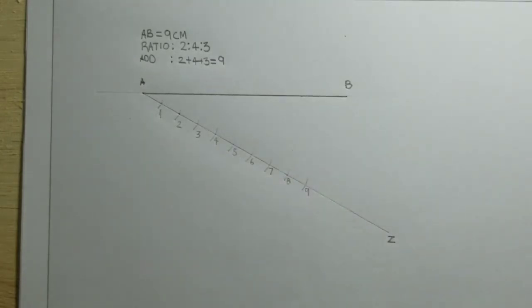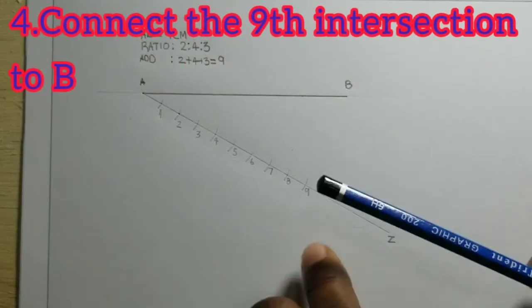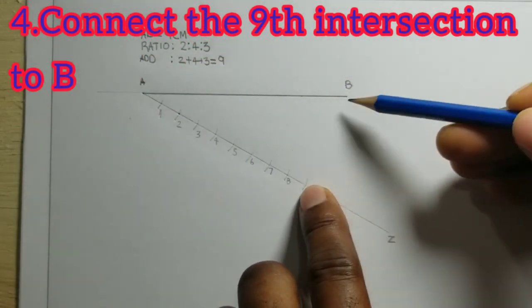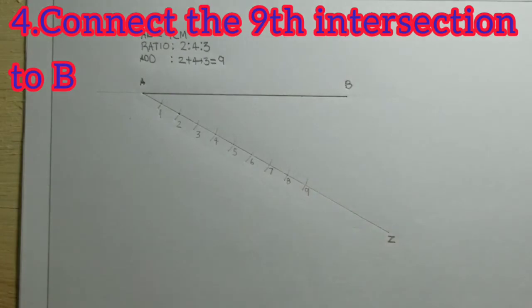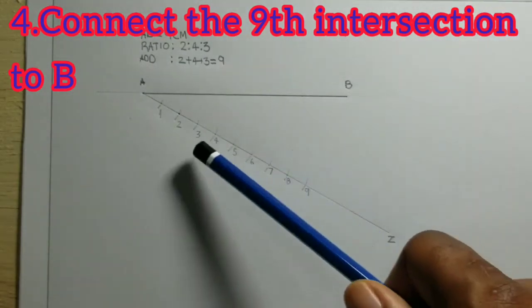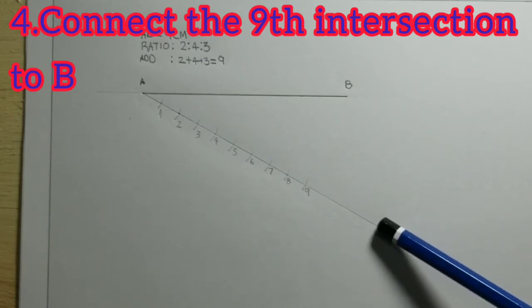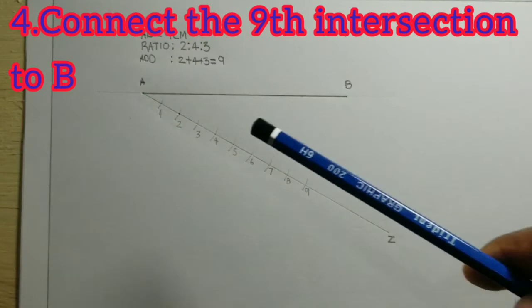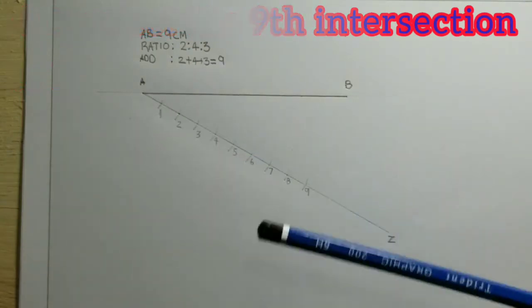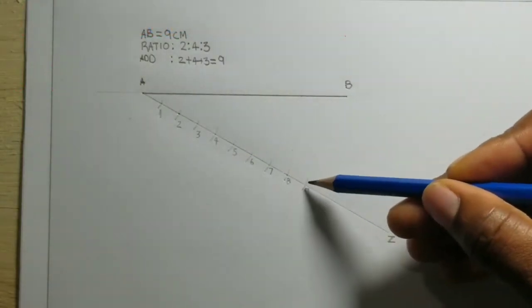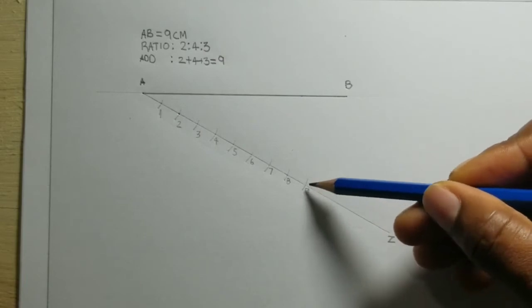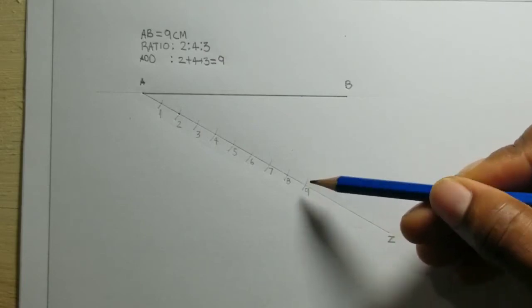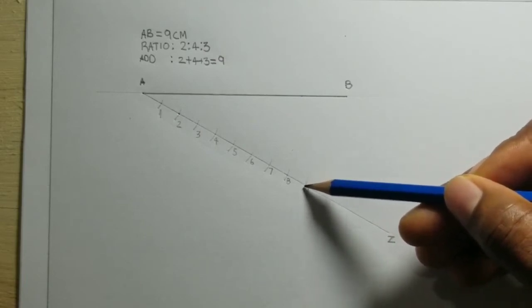Now we will connect the ninth intersection on this line with B. Now if the ninth intersection for you was somewhere down here, then you would have connected it from here to B. So always remember, from the last intersection on this line, we will draw a line to B.